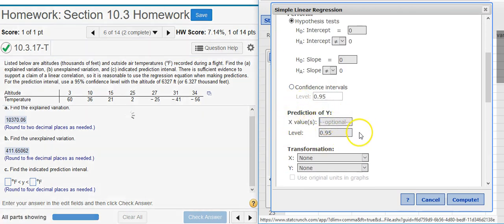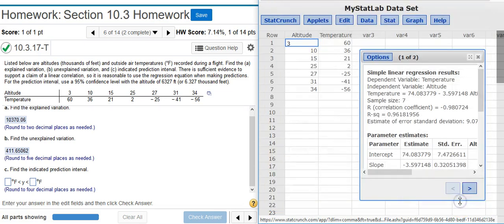So, I put in the value of X for which I want to make a prediction. Here, we're making a prediction for 6,327 feet. But, since all the altitudes are expressed in 1,000 feet, I need to put that in as 6.327. We're asked for a 95% confidence level. That's the default selection here. So, I'm just going to leave that alone. I press Compute.